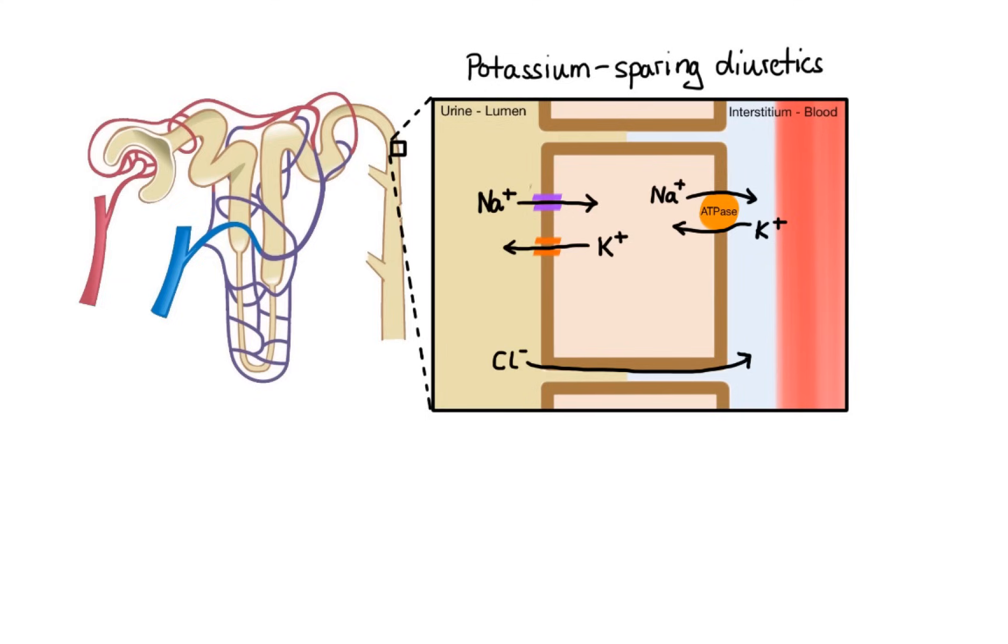The first group works simply by blocking sodium channel, which results in decreased sodium-potassium exchange and thus retention of potassium. Drugs that belong to this group include amiloride and triamterene. The second group works by antagonizing aldosterone. Aldosterone is a hormone which gets into the cell, binds to the intracellular receptor and stimulates transcription of genes encoding sodium channel and sodium-potassium ATPase thus increasing their expression. In other words, aldosterone leads to increased reabsorption of sodium and water and increased secretion of potassium.